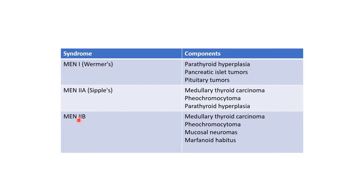MEN2b syndrome includes medullary thyroid carcinoma, pheochromocytoma, mucosal neuromas, and marfanoid habitus.